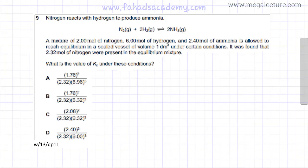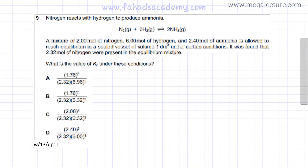In the following past paper question, nitrogen reacts with hydrogen to produce ammonia. This is the Haber process reaction, where nitrogen and hydrogen react to produce 2 moles of ammonia gas, and it is a reversible reaction.